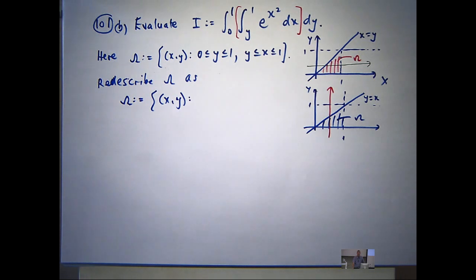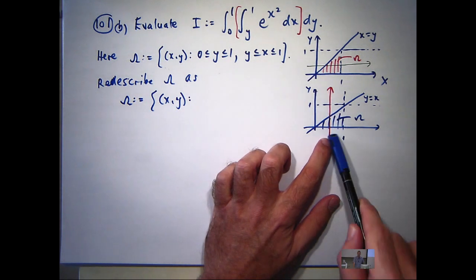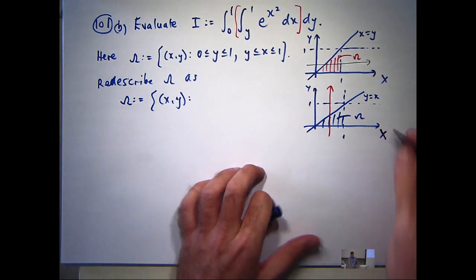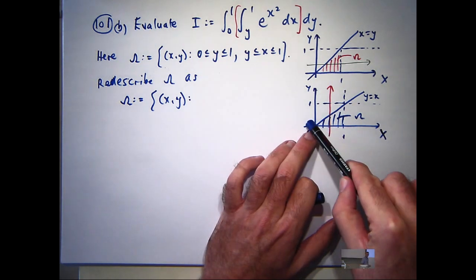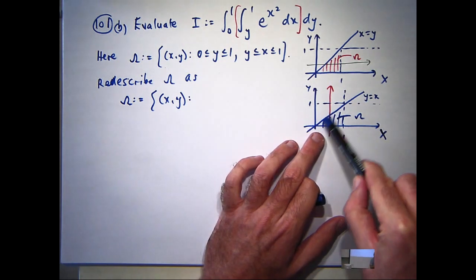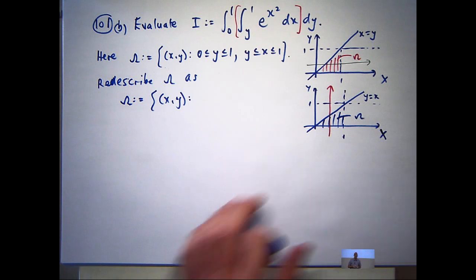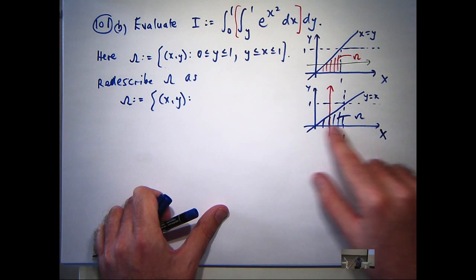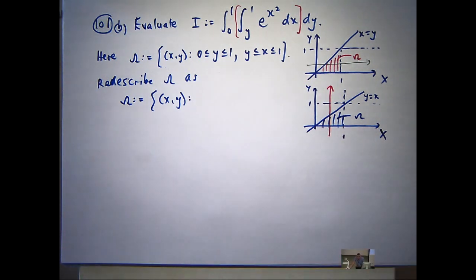So what's the region going to be? Well, you can see with the vertical line, the vertical line enters at the line y equals 0, and it leaves the region at the line y equals x. Now, to trace out the whole triangle, I need to move between 0 and 1 on the x-axis.